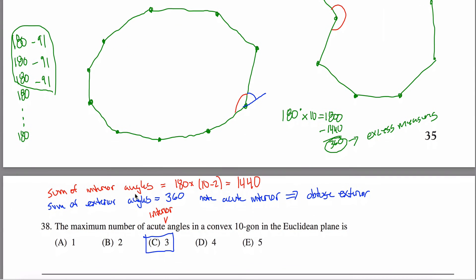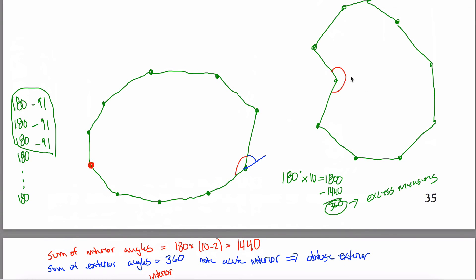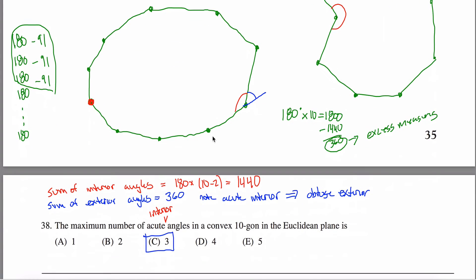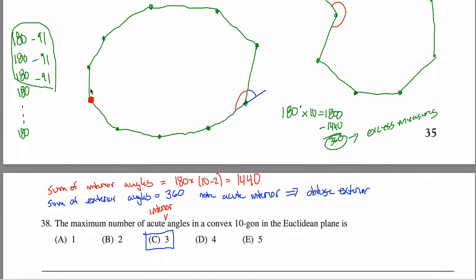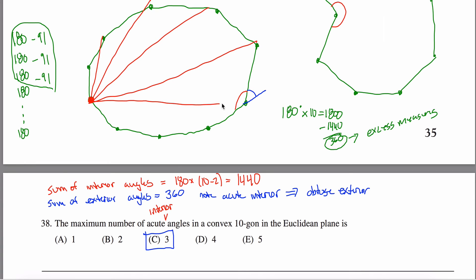A quick justification of the interior angle sum formula: pick one of the ten vertices as a special vertex. Connect it to all vertices it's not currently connected to — it can't connect to itself or its two neighbors. What this does is divide the shape into eight triangles. Or: I drew seven new lines (ten vertices minus three for itself and two neighbors), and seven lines create eight triangles, since each line creates a triangle and the last one creates two.